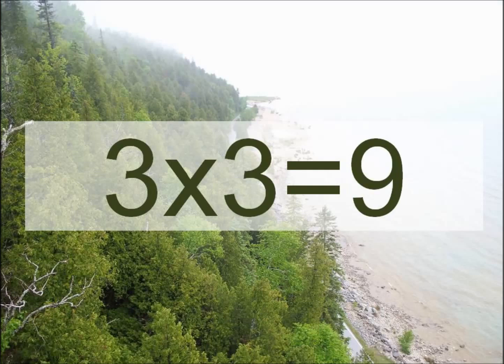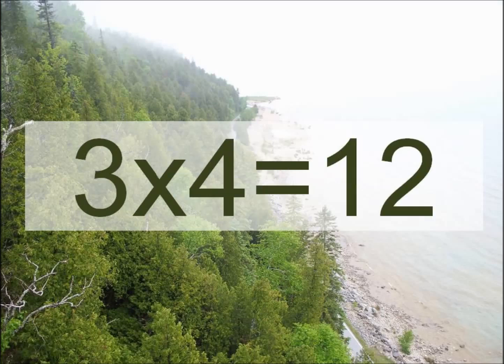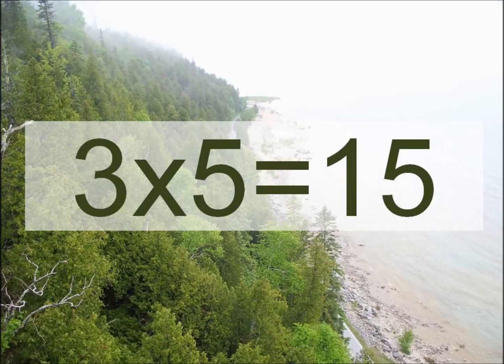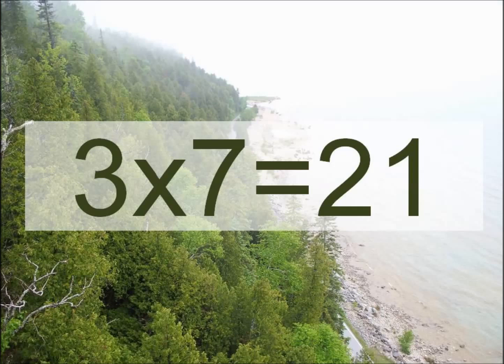Three times three equals? Nine. Three times three equals? Nine. Three times four equals? Twelve. Three times five equals? Fifteen. Three times six equals? Eighteen. Three times seven equals? Twenty-one.